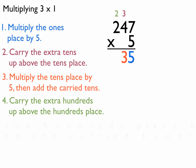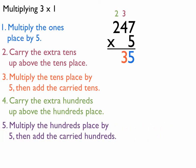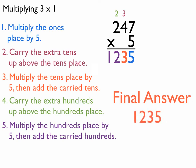Now I multiply the hundreds place by 5 and add the carried hundreds. 5 times 2 is 10, plus 2 is 12. I can put 12 right there because there's nothing left to multiply. The final answer is 1,235.